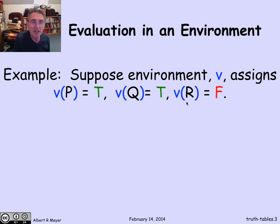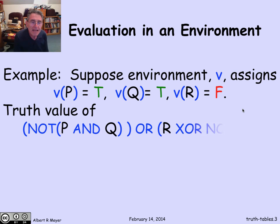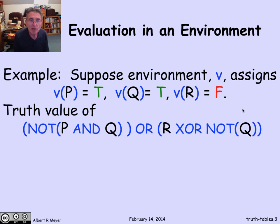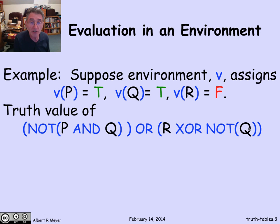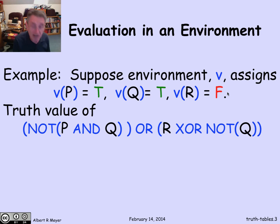So v of p is T, et cetera. I'm thinking of v as a function that maps a variable to its value. Now let's see how I would use this particular environment to figure out the value of a composite formula whose atomic parts are p and q and r and q again. It's pretty straightforward, but the methodical way to do it is from inside out.